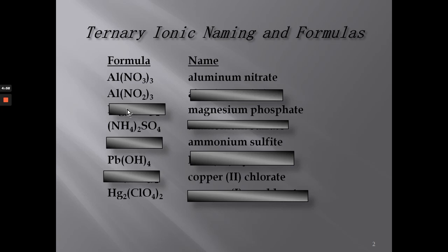We have aluminum nitrite because NO₂ is nitrite and NO₃ is nitrate. Since this has a plus three charge and the ion has a negative one, if we cross the charges we know what the subscript should be. The charges on the polyatomic ions — the oxyanions — don't change; it's still negative one.